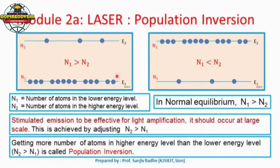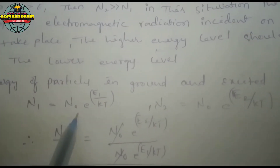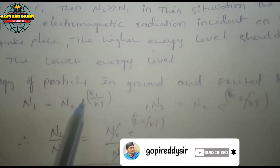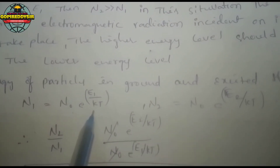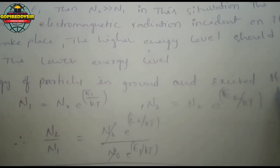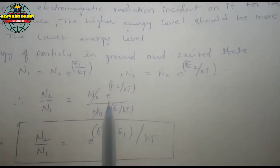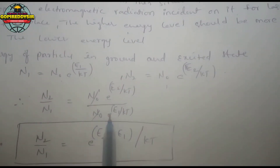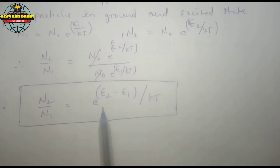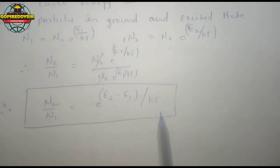For population inversion, the higher energy level should be more populated than the lower energy level. The number of atoms in the excited state must exceed those in the ground state. The mathematical relation is: N2 by N1 equals exponential of minus (u2 minus E1) by KT. This equation describes the population inversion condition.